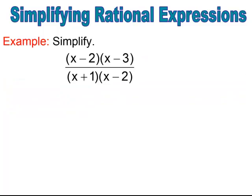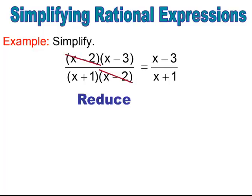Here's an example. This is already in factored form. You would factor the rational expression, and then cancel out any common factors in the numerator and denominator. In this case, there is a common factor of x minus 2 in the numerator and denominator, so we cancel them out. What is left is the simplified rational expression: x minus 3 all over x plus 1.